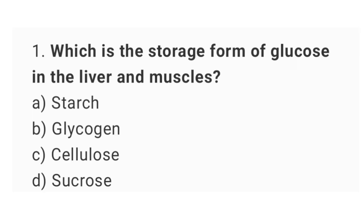Question number 1: Which is the storage form of glucose in the liver and muscles? The right answer is option B: Glycogen.